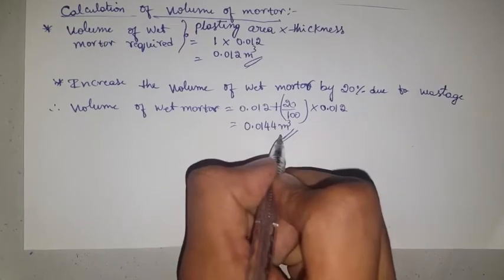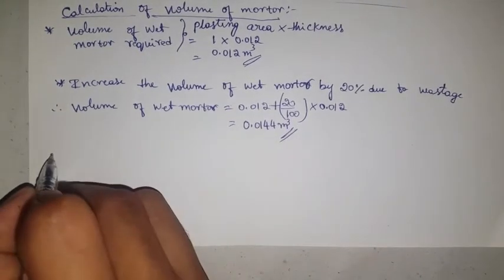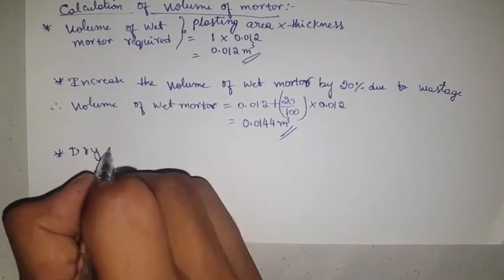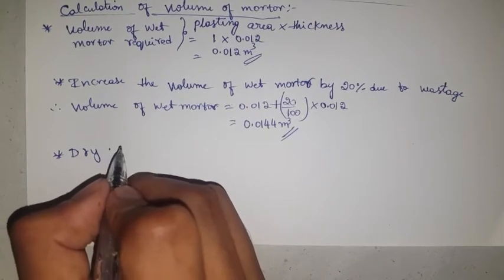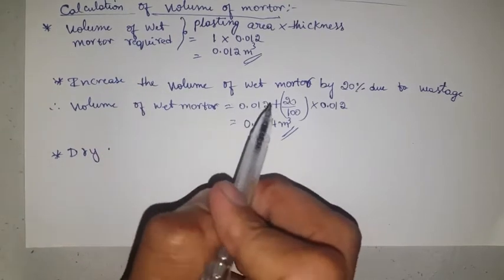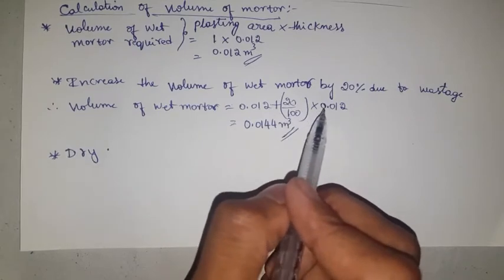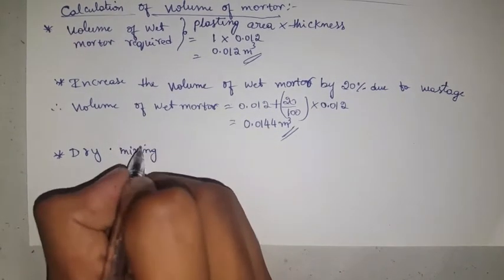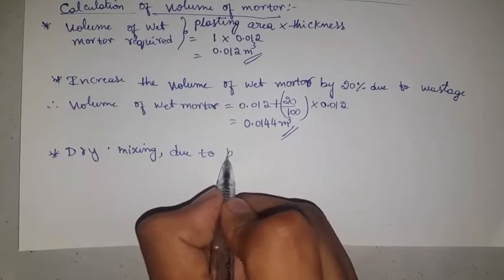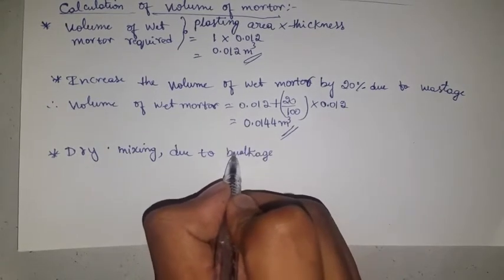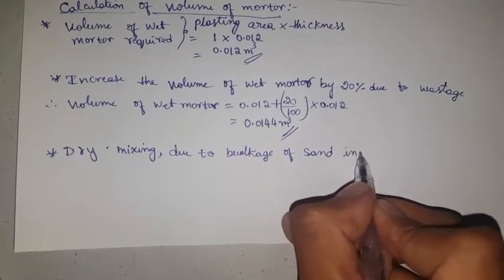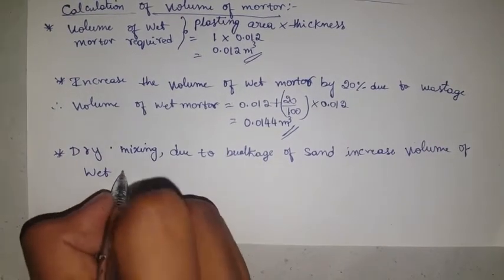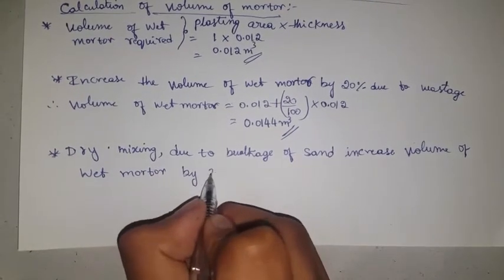Volume of wet mortar is 0.0144 meter cube. Next, for dry mixing, we add 33 percent — or one-third extra — due to bulkage of sand. So we multiply 0.0144 meter cube by the dry mixing factor, increasing volume by 33 percent or one-third extra.